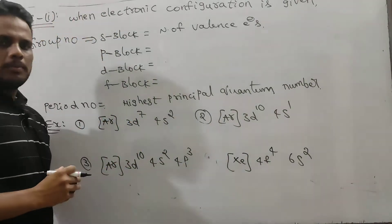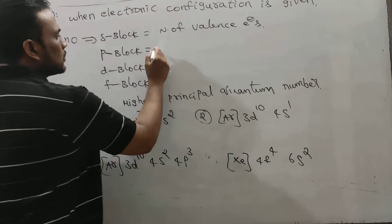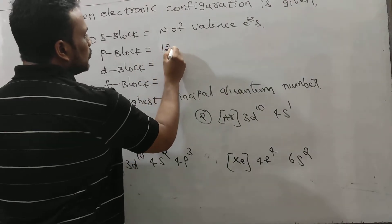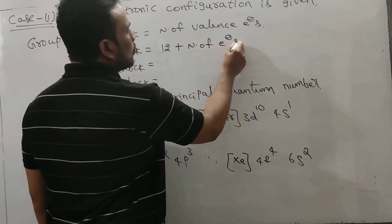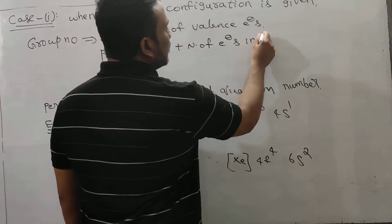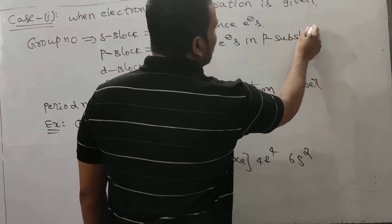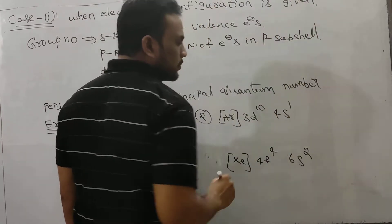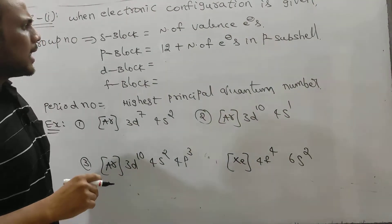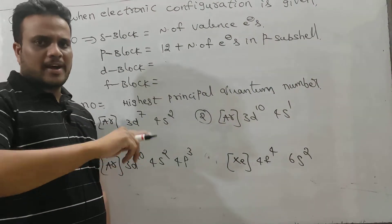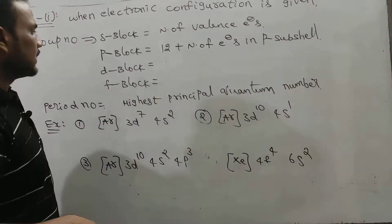When it comes to P-block, in case of P-block, the group number should be 12 plus the number of electrons in the P subshell. We know in P subshell, the configuration varies from NP1 to NP6 — that is one to six. So six groups are there in the P-block.